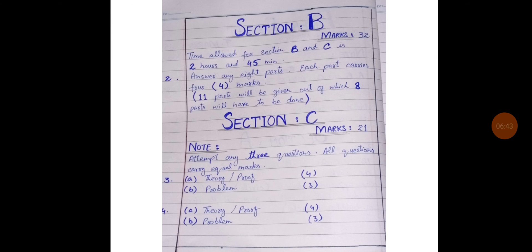Then write the heading of section B. The time allowed for section B and C is 2 hours and 45 minutes and the marks 32. In section B, answer any 8 parts. Each part carries 4 marks. 11 parts will be given to you, out of which 8 parts will have to be done.